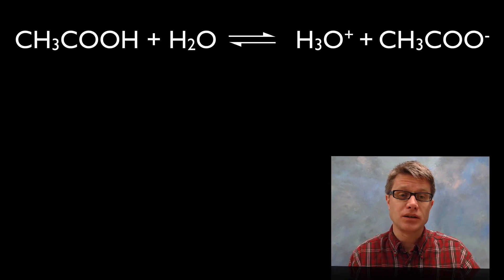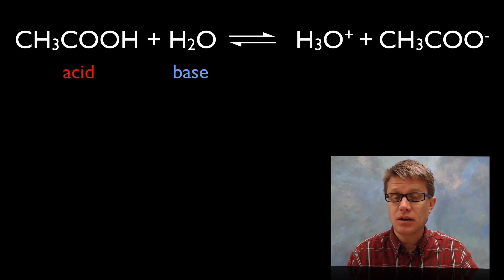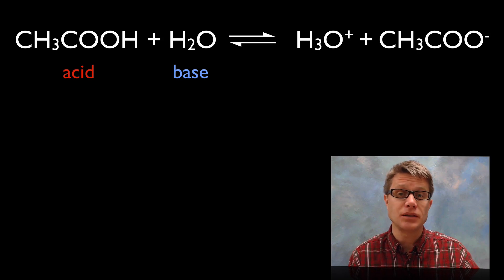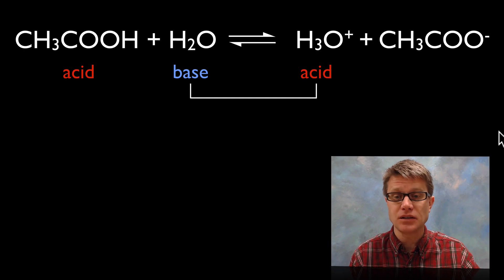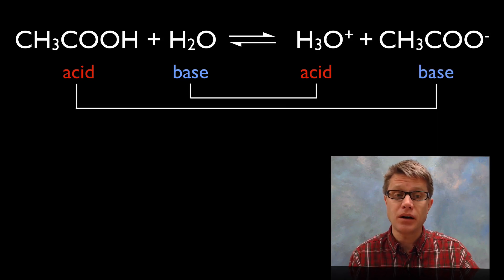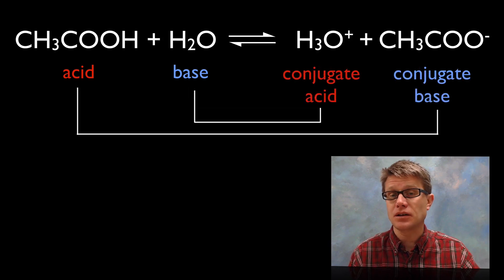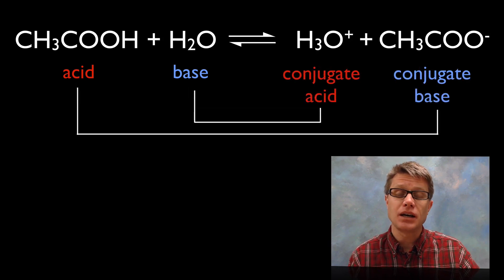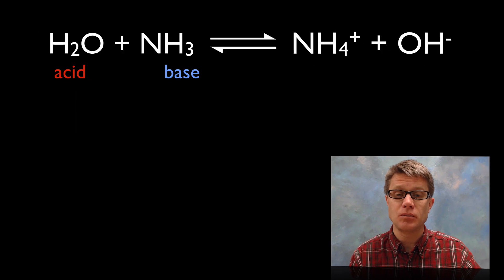If we look at a simple reaction — acetic acid and water — the acetic acid is going to be the acid and the water is going to serve as the base, accepting protons from acetic acid. As it does that it's essentially forming an acid, and since this is a reversible reaction it can push back towards the base. We have these acid-base pairs: everything on the left side is an acid and a base, and everything on the right side is a conjugate acid or a conjugate base.